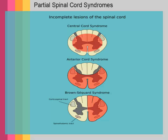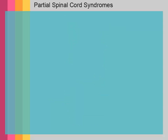Besides a complete cord transection — which obviously causes complete lack of sensation of all modalities as well as complete paralysis below the level of lesion — there are three not uncommon partial spinal cord syndromes: the anterior cord syndrome, central cord syndrome, and Brown-Séquard syndrome.